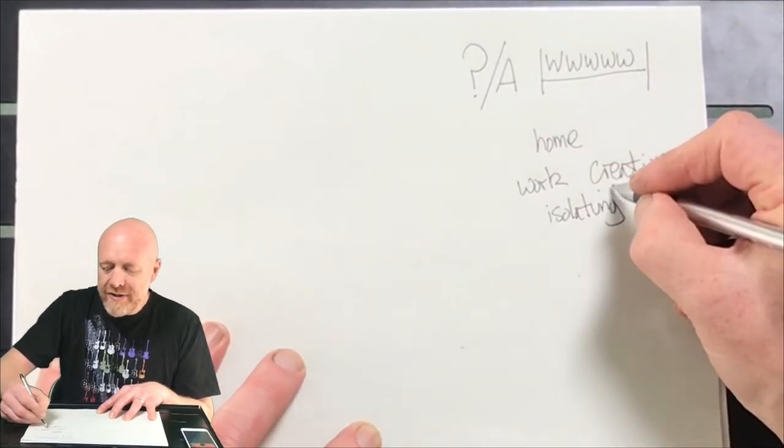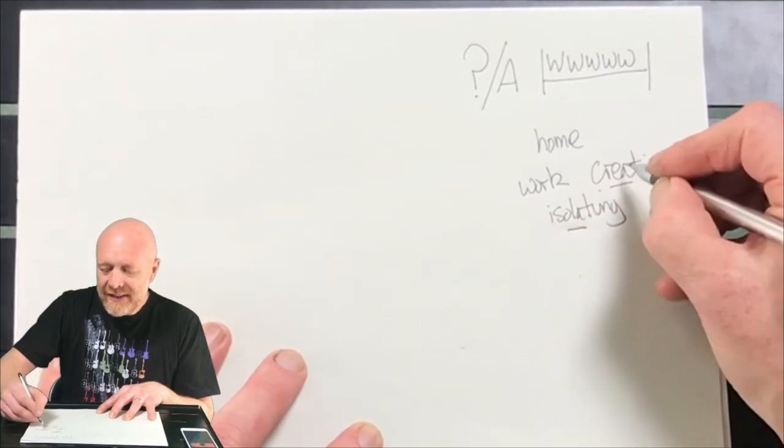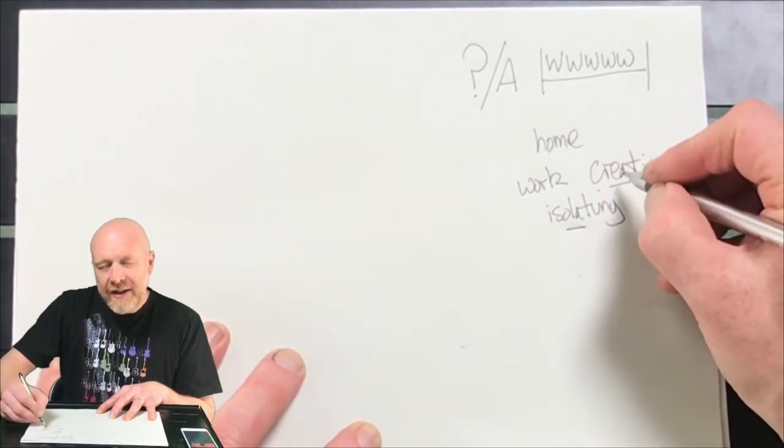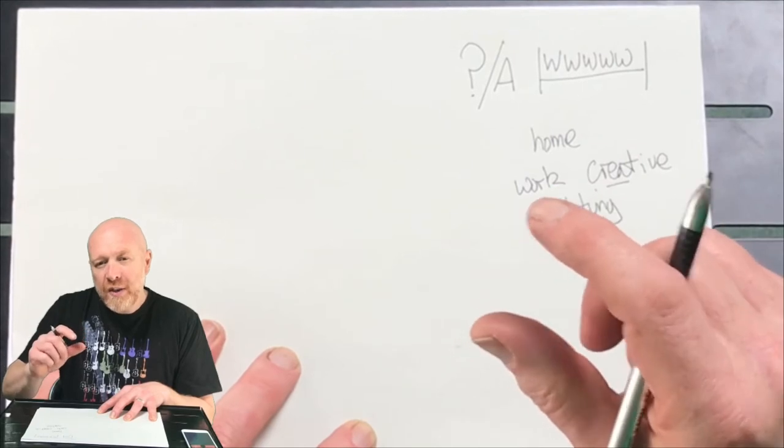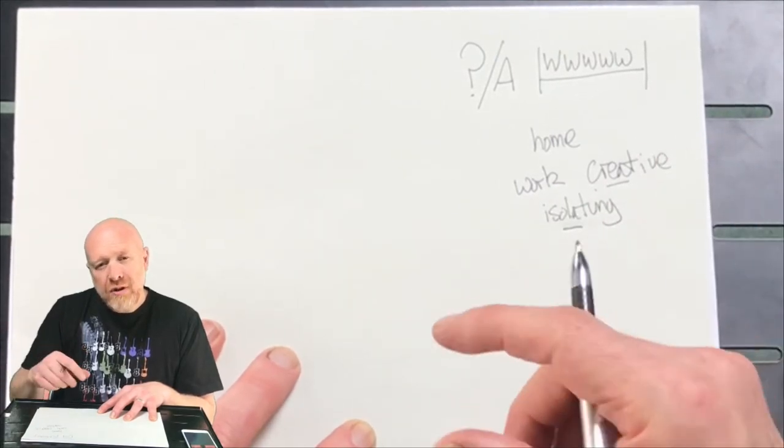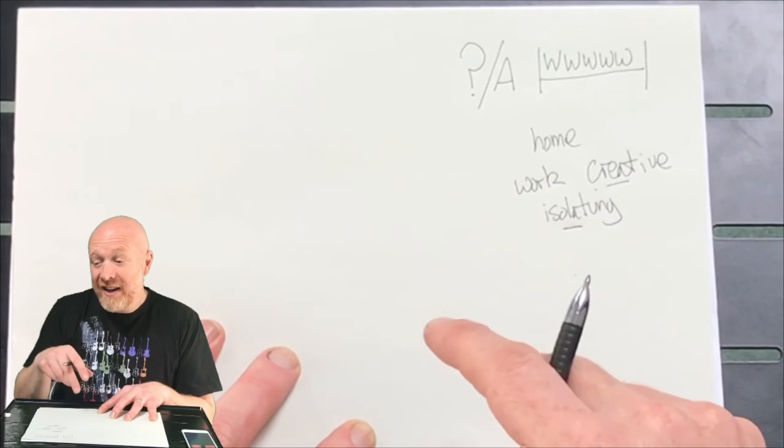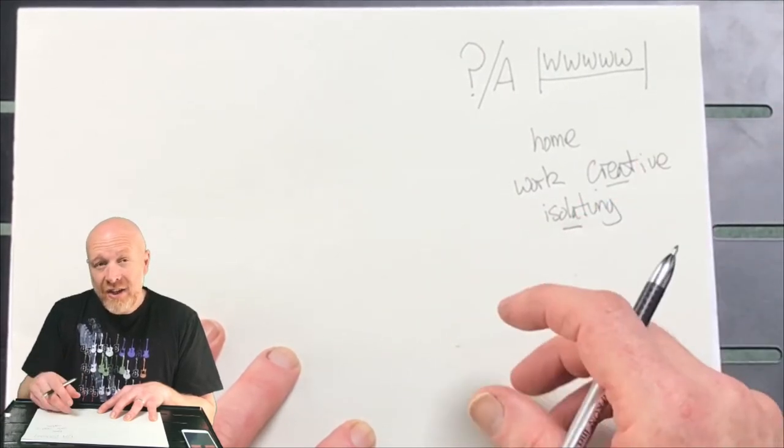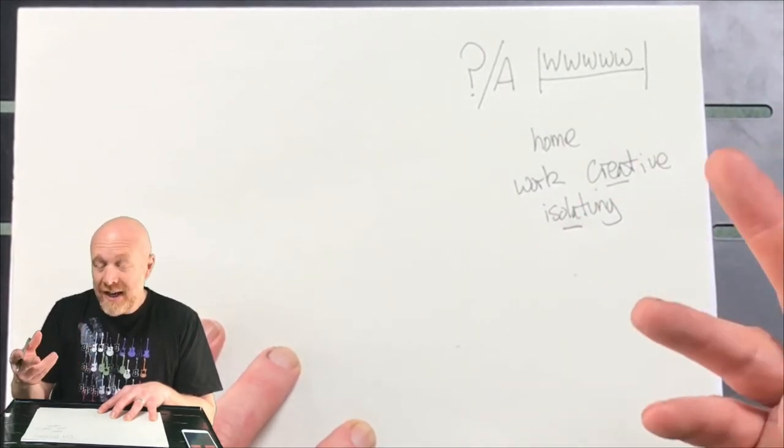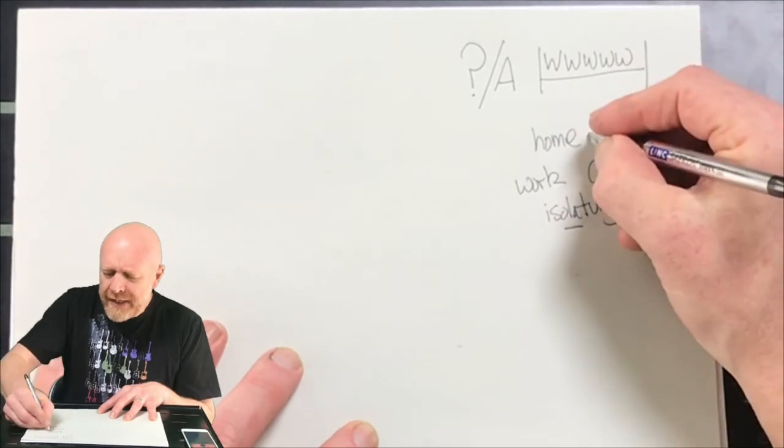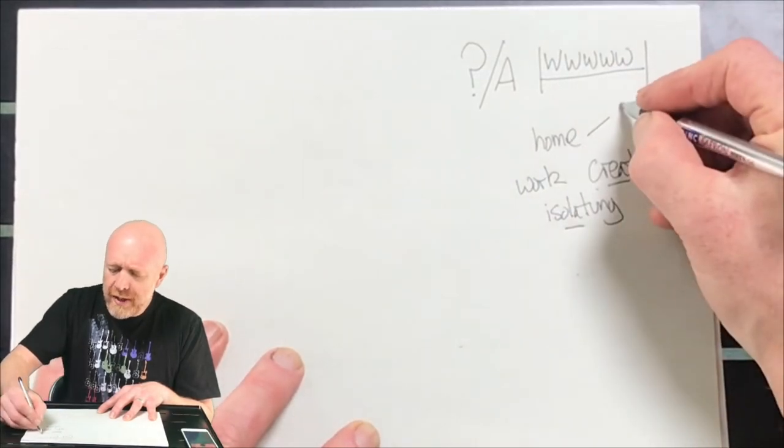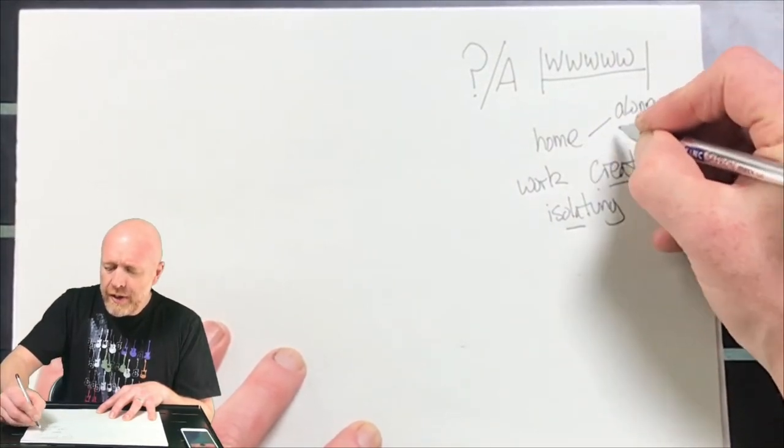I can see already here create and isolate have got the A sound together. Now with rap we're using talking with rhythm and rhyme. Rhyme is where you have the same sound at the end of the words, like create, isolate, run, fun, done. I'm thinking of rhymes already here. Home could rhyme with alone. It could rhyme with zone.